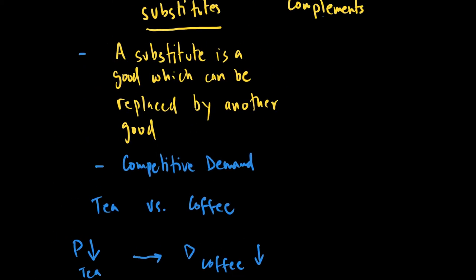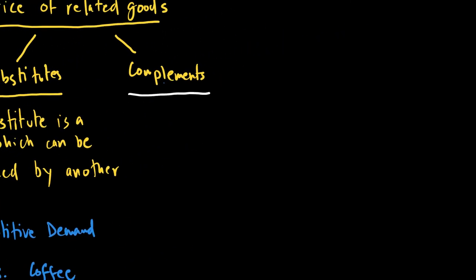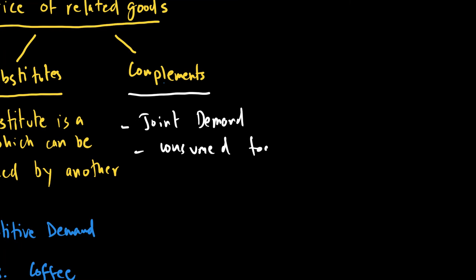Similar to substitutes, we also have complements — goods that are in joint demand, meaning they are consumed together. People have a consumption behavior that requires both goods to be consumed together. A good example is tea and milk, which are consumed together in many countries. Whenever there is a fall in the price of tea, there will be an increase in the demand for its complement, milk, because more tea consumed results in more milk being demanded.